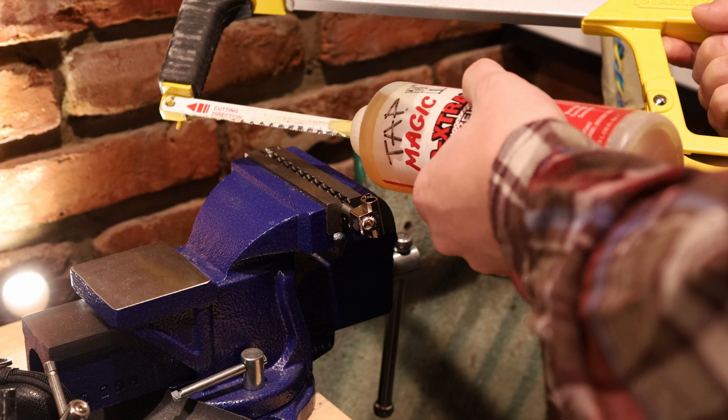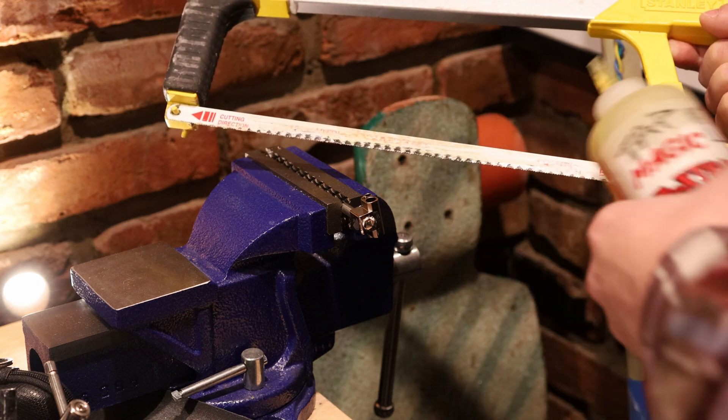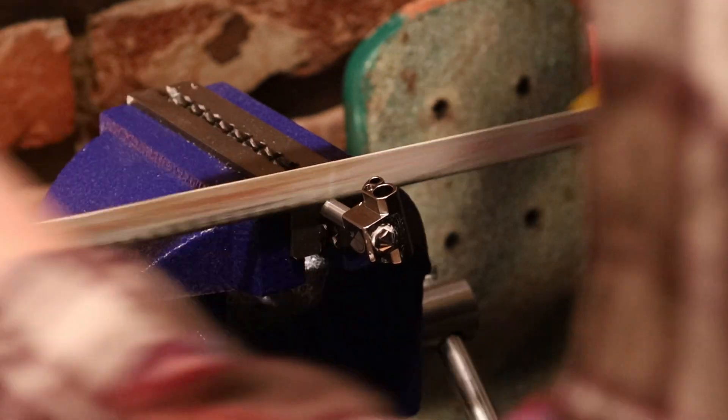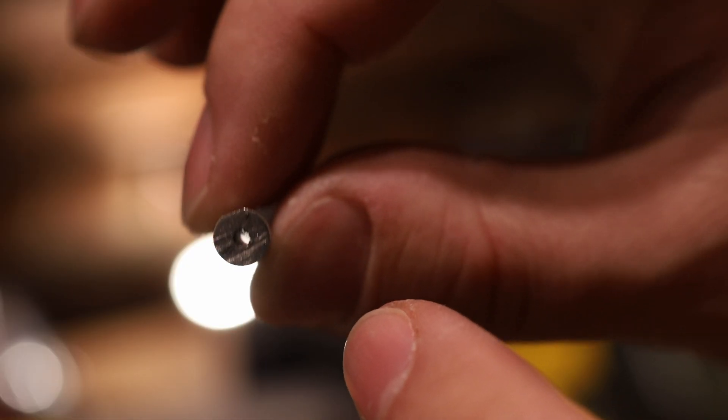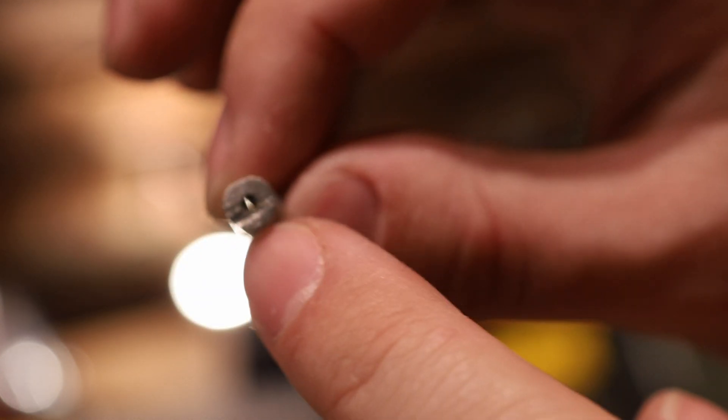To get the best results with a hacksaw, you want to use cutting fluid and a sharp blade. If you're doing this right, you should see smoke coming off. I don't want to clog that nozzle with carelessness, so I'm going to need to clean this out and make sure I've got a flat edge here.